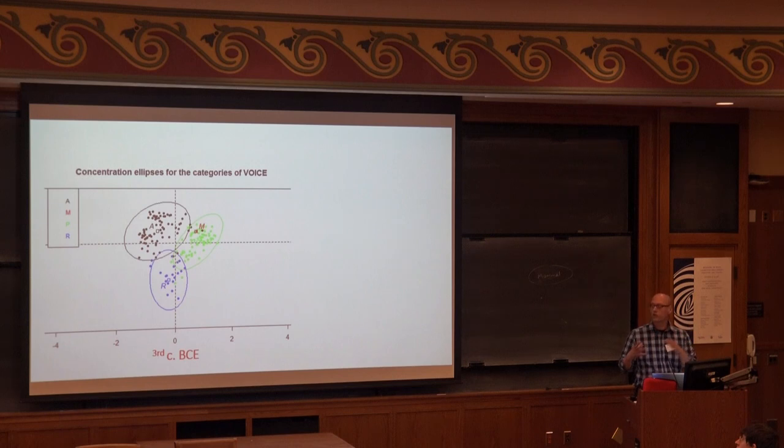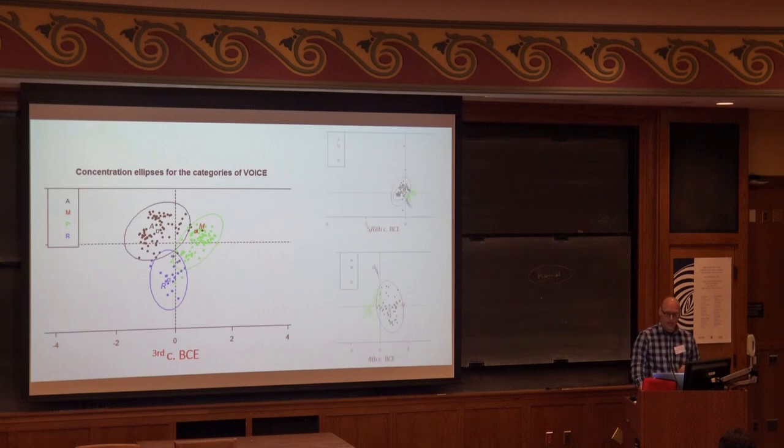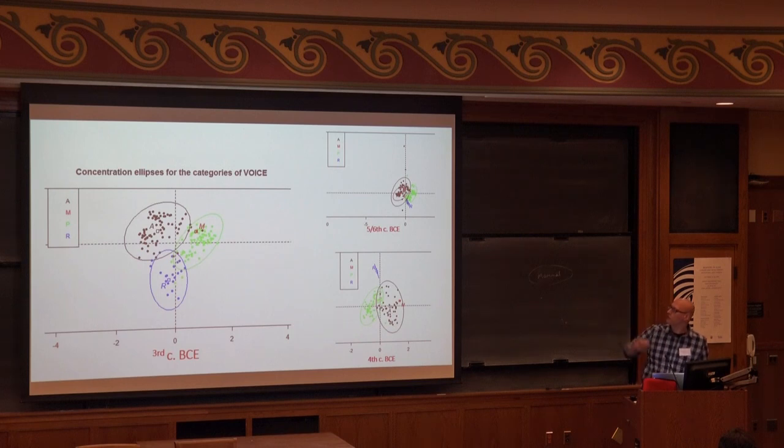And if we see the concentration ellipses for the categories of voice for that period, we are going to see the new picture. This picture actually represents, you can say, prototypicality of distribution taking as a reference the very specific variable. So we can see that there is no overlapping. This is precisely a tendency towards prototypicalization. And if you compare it with other centuries, you are going to see how much more interesting this picture is in comparison to the rest.